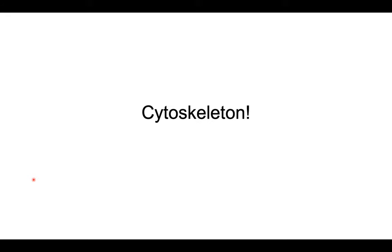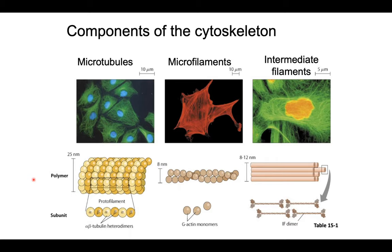Now we can get to our content — the cytoskeleton. This is a really fascinating topic. A lot of diagrams we see of cells in textbooks leave out a lot of these molecules, but they're pretty integral in keeping the cell in its shape and contributing to movement. We're going to uncover some mysteries of the cytoskeleton today. There are three main components: one big group is called microtubules, named based on their size, and they're made of individual polymers called tubulin. Each molecule of tubulin is a heterodimer of alpha and beta subunits.